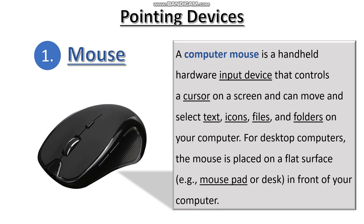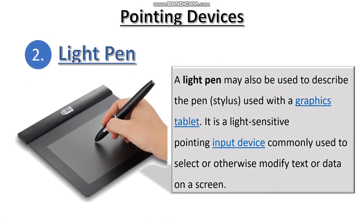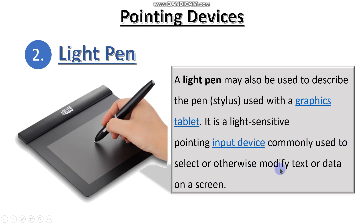The next pointing device is the light pen, also called a stylus. A light pen may also be used to describe the pen used with a graphic tablet — as you can see here, this is a graphic tablet. It is a light-sensitive pointing input device commonly used to select or otherwise modify text or data on a screen.